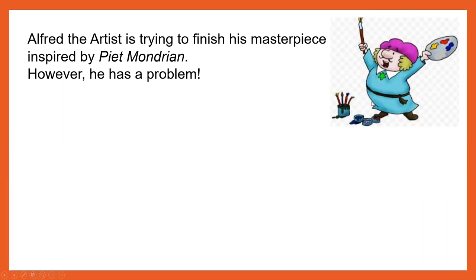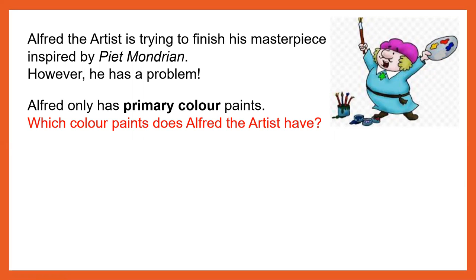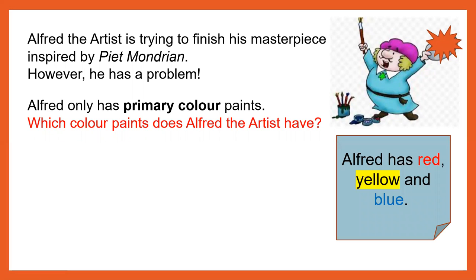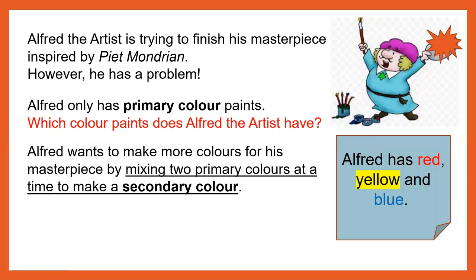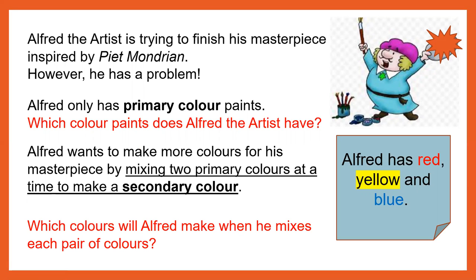Here I've got an artist called Alfred. Alfred needs your help today. Alfred the artist is trying to finish his masterpiece inspired by Pierre Mondrian. However, he has a problem. Alfred only has primary coloured paints. Pause the video here and answer this question: which colour paints does Alfred the artist have? That's right, Year One. Alfred has red, yellow and blue paints. Alfred wants to make more colours for his masterpiece by mixing two primary colours at a time to make a secondary colour. Which colours will Alfred make when he mixes each pair of colours? Pause the video here and see if you can answer the question.